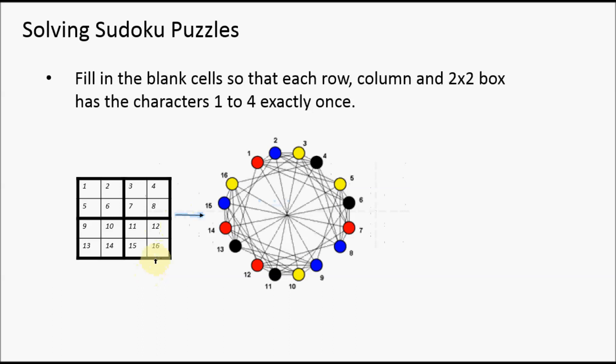Let's consider a smaller example, a 4x4 grid. What we do is label the cells 1 through 16, and each of these cells corresponds to a vertex in our graph.